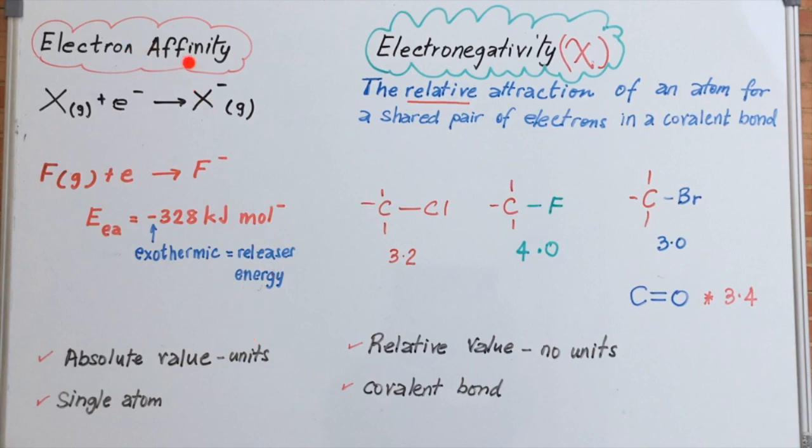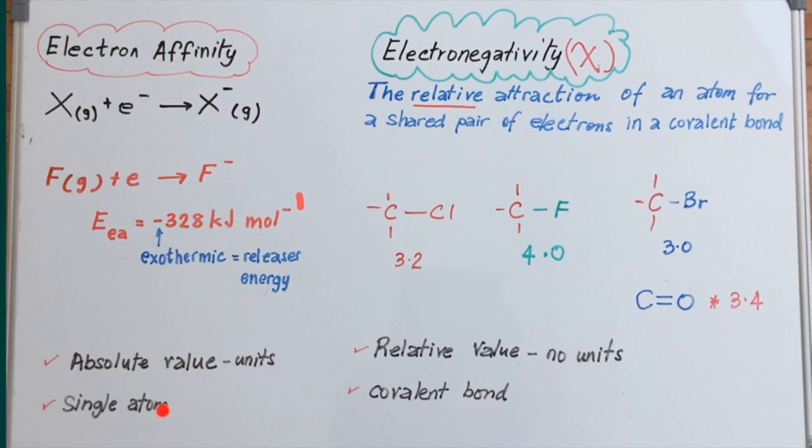And here we have a summary to show the differences between electron affinity and electronegativity. Electron affinity does have an absolute value, and it does have some definite units. Here the unit being kilojoules per mole. And it essentially involves a single atom being a measure of the energy associated as a single neutral atom in the gaseous state attracts an electron to form a single ion also in the gaseous state.